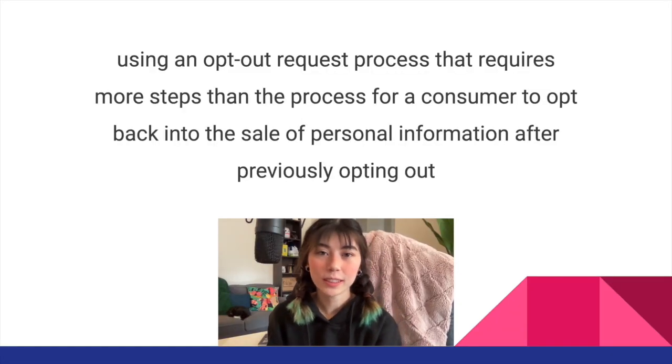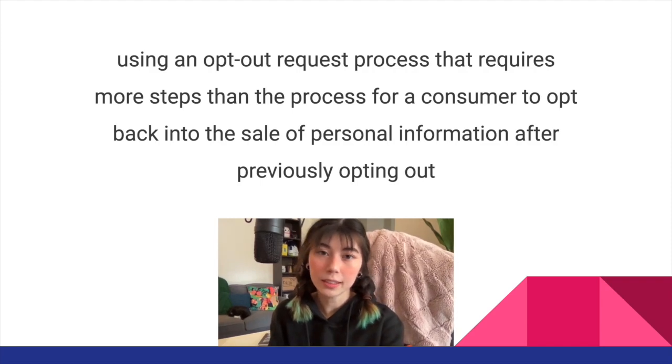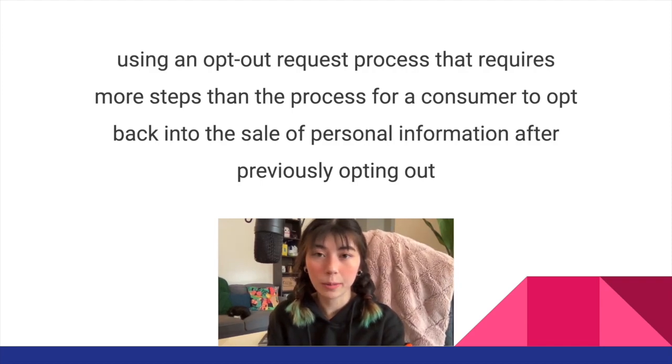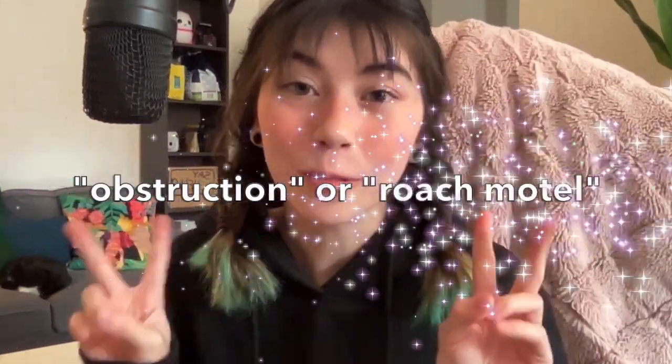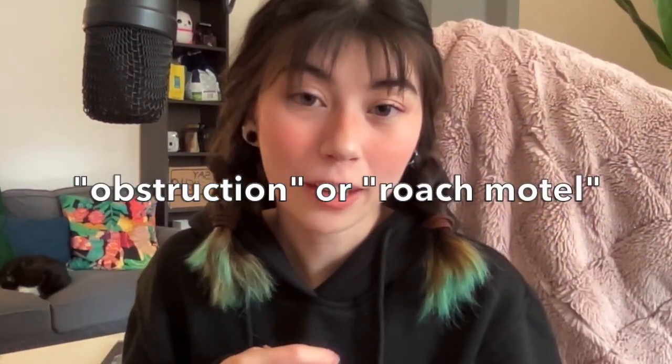The TL;DR on the new regulation bans using an opt-out request process that requires more steps than the process for a consumer to opt back into the sale of personal information after previously opting out. We call this obstruction, or the roach motel dark pattern. Have you ever moved in with roaches? From experience with my last apartment, it's super easy to get into the situation and much more difficult to change your mind and leave.